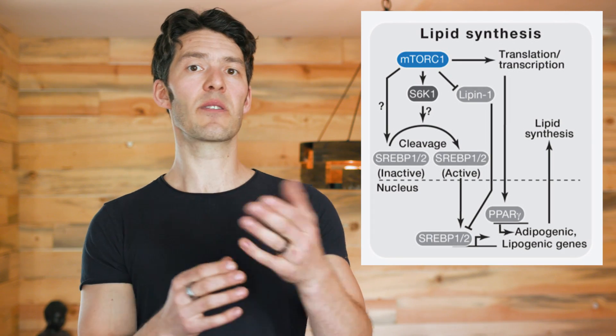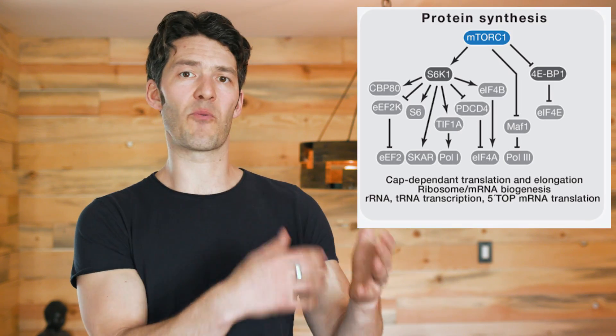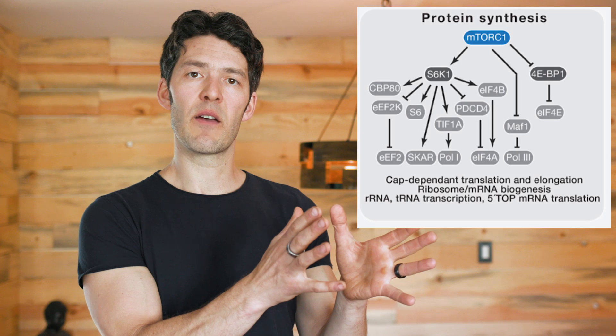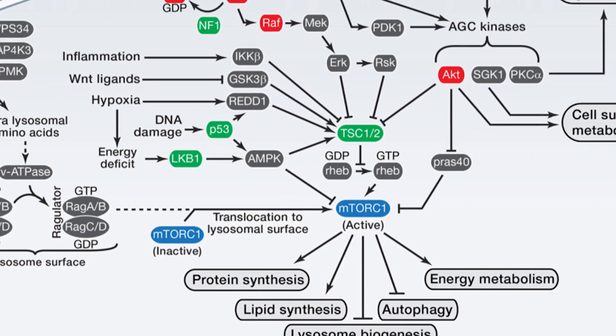mTOR will stimulate lipid synthesis and pro-growth pathways in the body, potentially causing people to gain body fat — and muscle protein synthesis is wrapped into that as well. But energy excesses are not the only things that affect the kinases that lead to mTOR stimulation. There's hypoxia, other hormones like insulin and IGF-1, and inflammation — a lot of non-nutritive factors that affect this key pro-growth pathway that is a signature of anabolism.